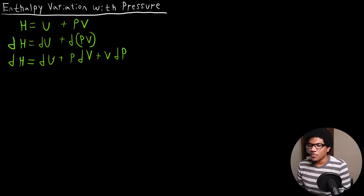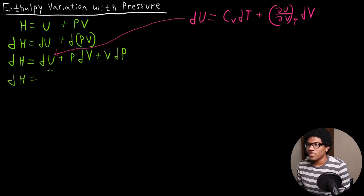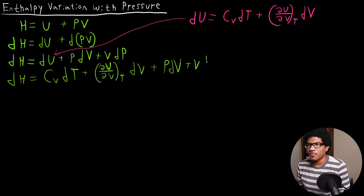Now with DU, we want to use the total differential form of DU, which we looked at in the last video. We showed that DU equals CᵥDT plus (∂U/∂V)_T DV — that internal pressure term. Plugging that in, we get DH equals CᵥDT plus (∂U/∂V)_T DV plus PDV plus VDP.